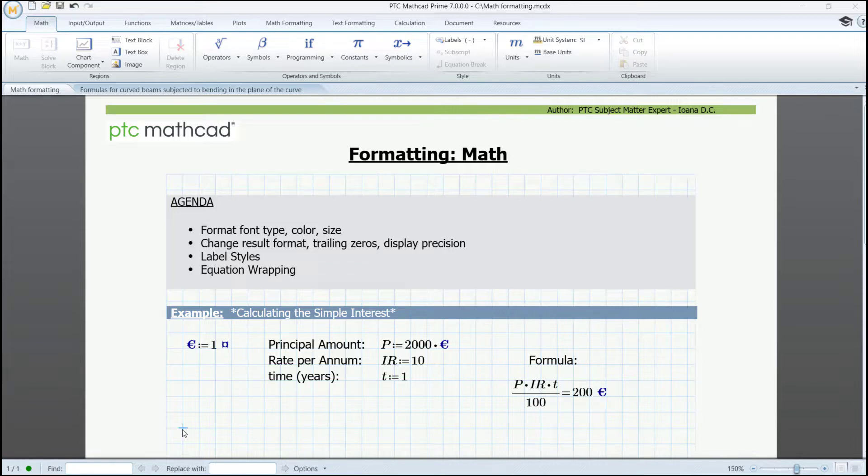This is a summary of what we're going to do. We're going to change the font type, color, and size for the math regions. Then we can configure the result format, show trailing zeros, along with changing the display precision, restyle labels, and also arrange equations to fit nicely in our paper.